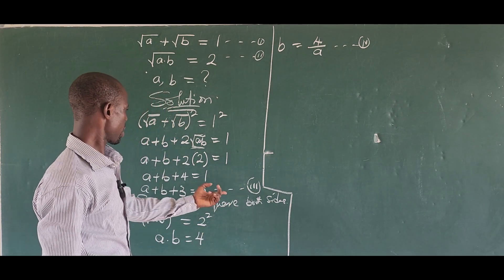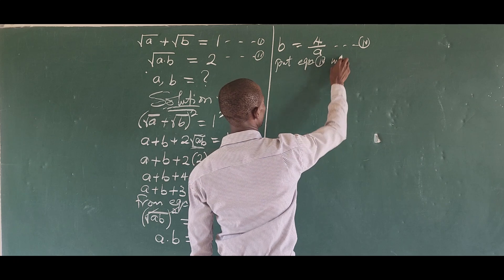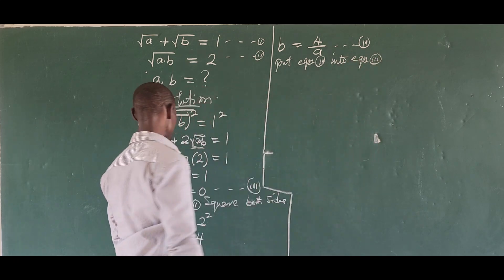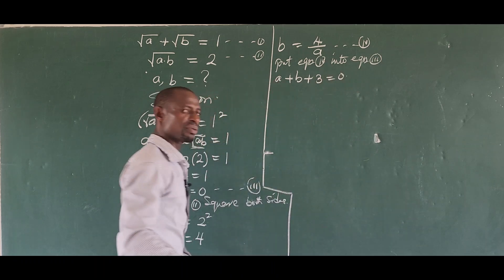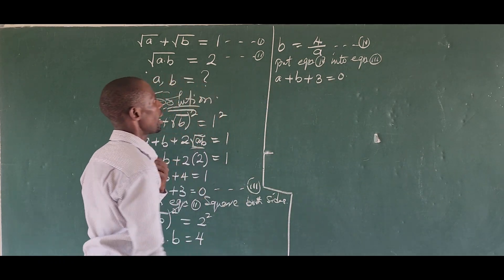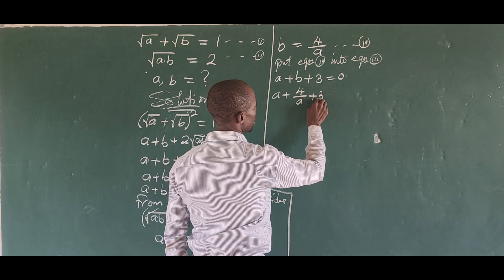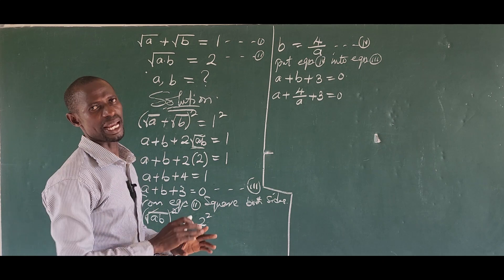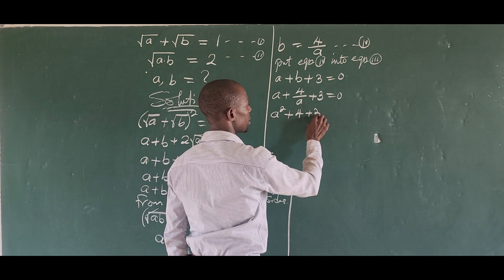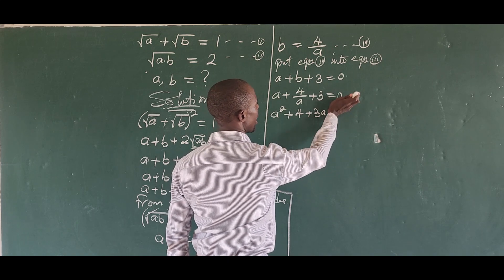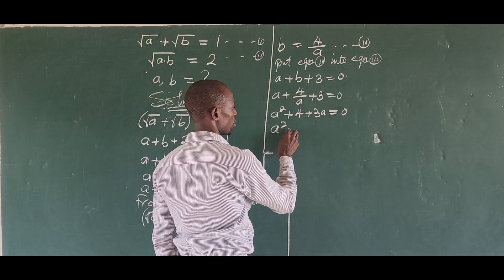Now we put equation four into equation three. Bringing down equation three — a plus b plus three equal to zero — and replacing b with four over a, we get a plus four over a plus three equal to zero. Multiplying all terms through by a gives us a squared plus four plus three a equal to zero. Rearranging, this is a squared plus three a plus four equal to zero.